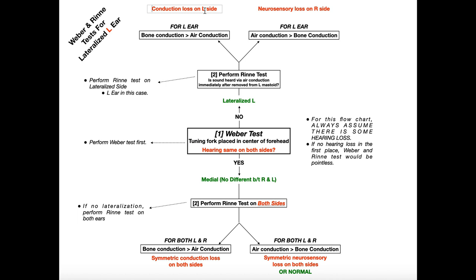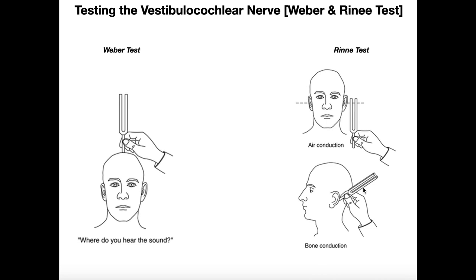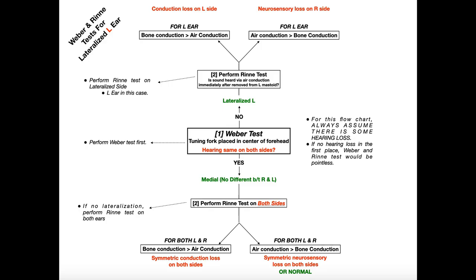In contrast, if after removing the tuning fork from the mastoid process and placing it next to the ear they do hear the vibration, then air conduction is better than bone conduction. That means you have neurosensory loss on the opposite side — so if it lateralized left, the neurosensory loss is on the right side. This tells you not only which ear has the loss, but what type of loss it is. The key point is you cannot use these results independently; you must perform both the Weber and the Rinne test.